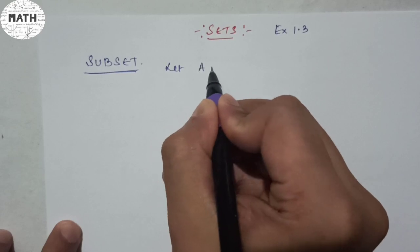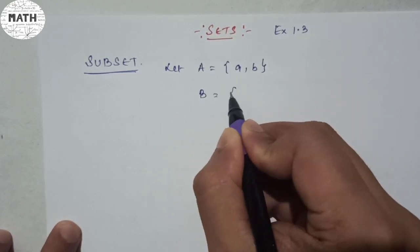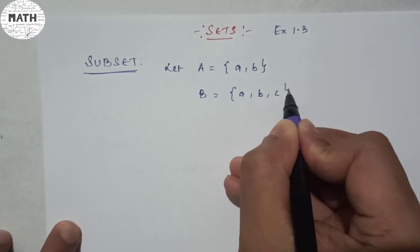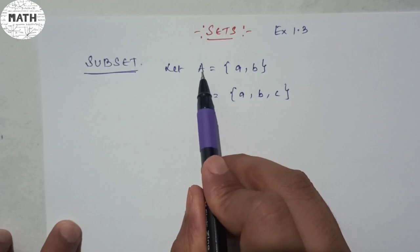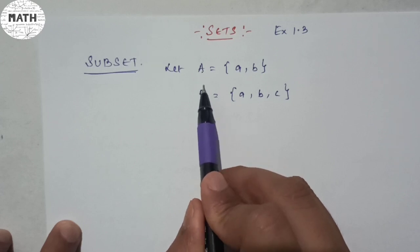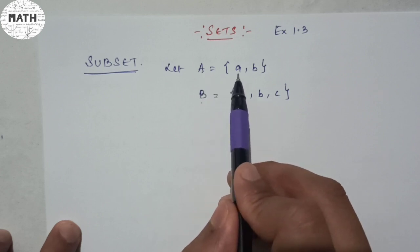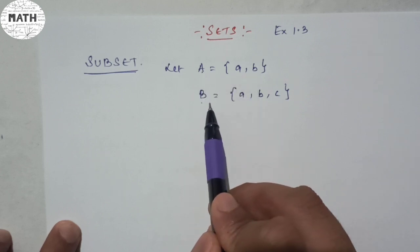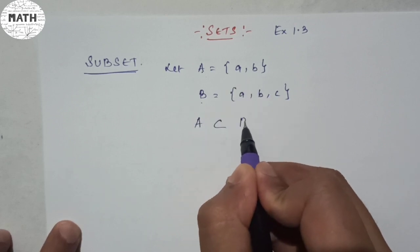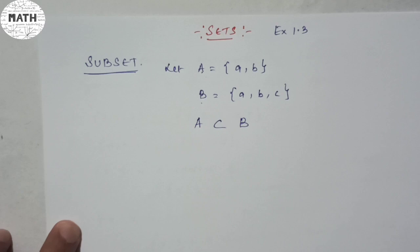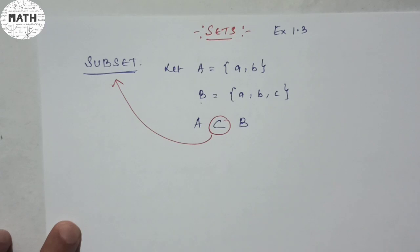Suppose I say let A is equal to {a, b} and B is equal to {a, b, c}. If you can see in these two examples, the set A and set B — the similarity between them is that whatever elements are there in set A are inside set B. So ab is inside B. This sign indicates nothing more than your subset.